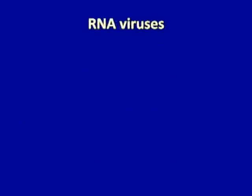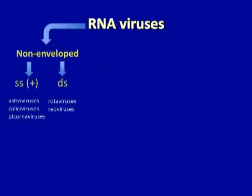Let's look first at categories of RNA viruses. The non-enveloped RNA viruses include those that are single-stranded in the positive sense — the astroviruses, caliciviruses, and coronaviruses — whereas the double-stranded RNA viruses, including rotavirus and reovirus, tend to have segmented genomes. That is, each of the genes in these viruses is carried on a separate piece of double-stranded RNA.